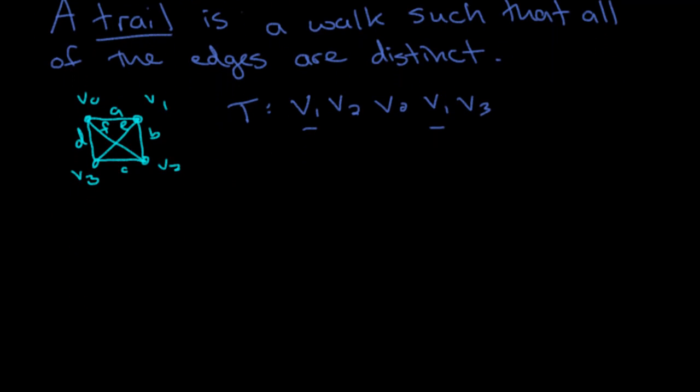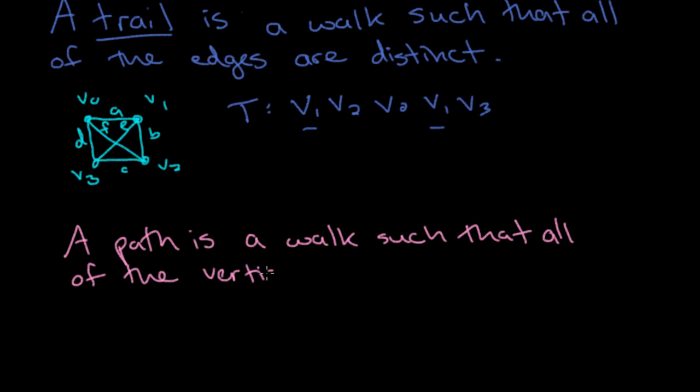All right, now let's take a look at the idea of a path. A path is a walk such that all of the vertices and edges are distinct.